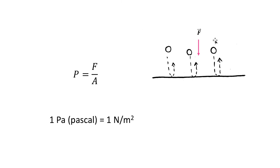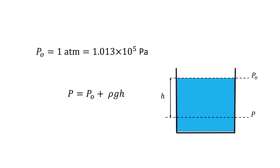When you consider a fluid, this is the force that the fluid will exert on a surface it is in contact with. The atmosphere is a huge amount of fluid over the Earth, and it exerts a pressure on the surface of the Earth equal to p₀ = 1.013 × 10⁵ Pascal, which is equal to one atmosphere — another unit to measure pressure.